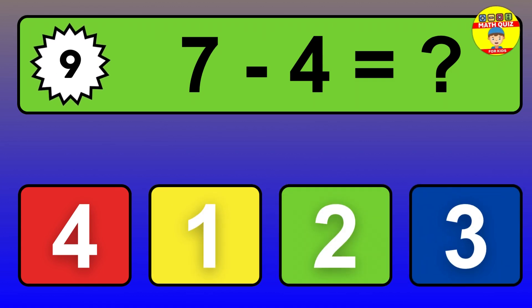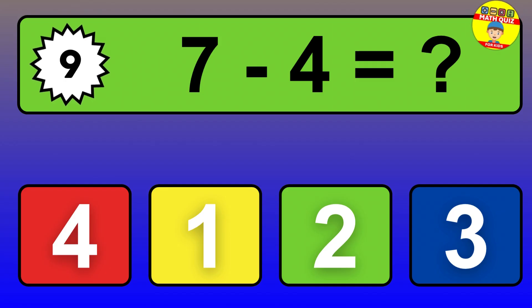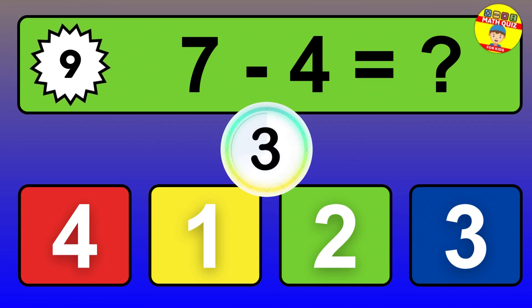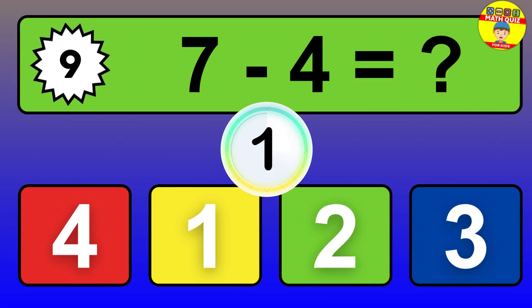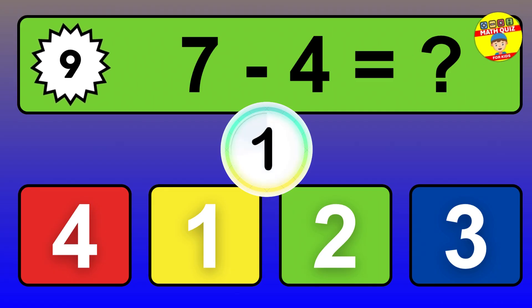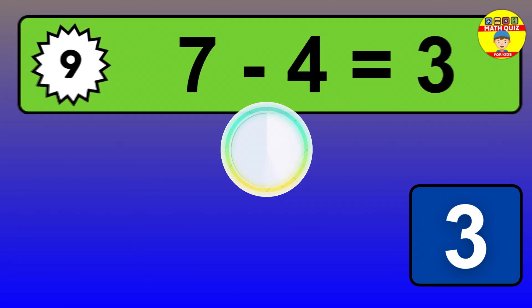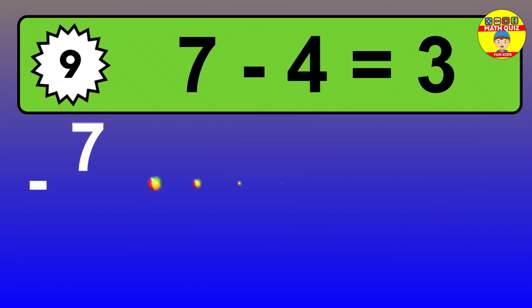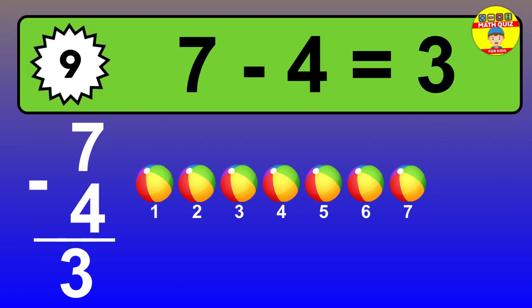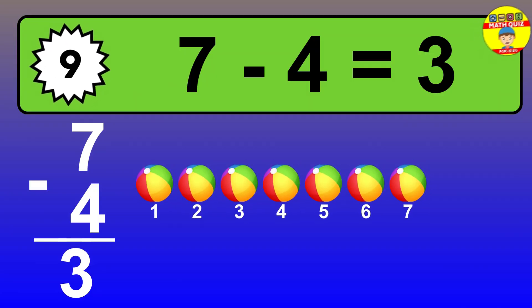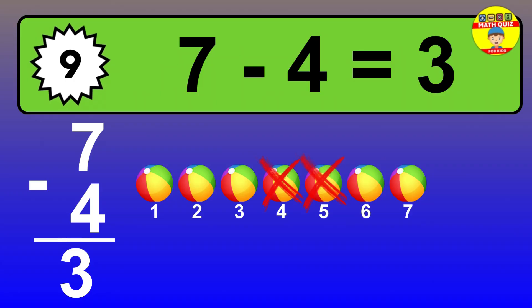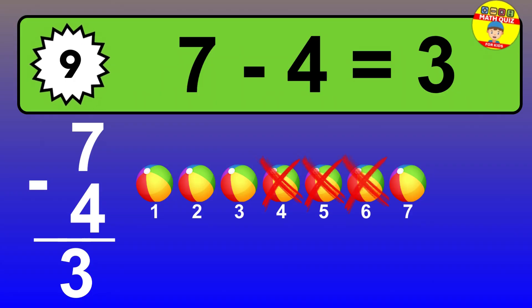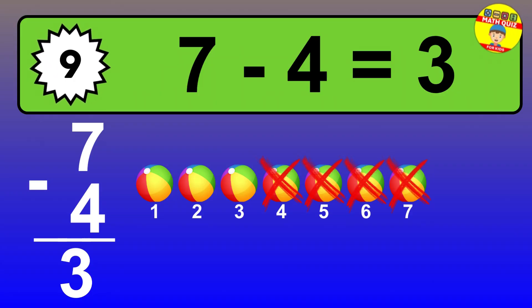Question 9. 7 minus 4 equals what? So the answer is 7 minus 4 is 3. Let's count it. 1, 2, 3.